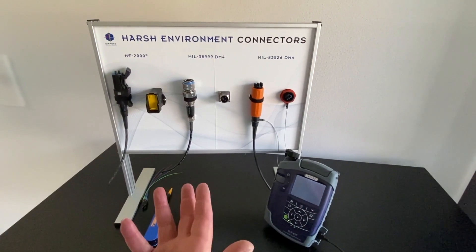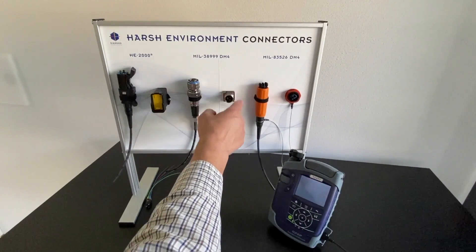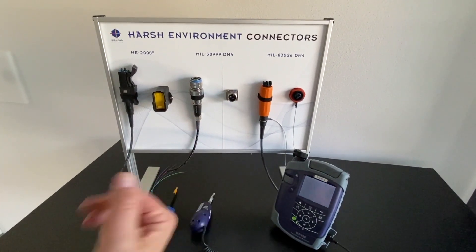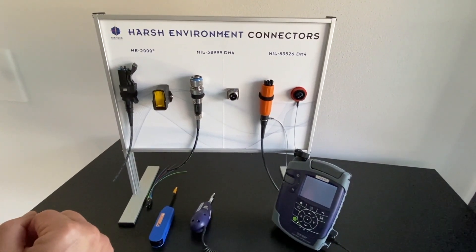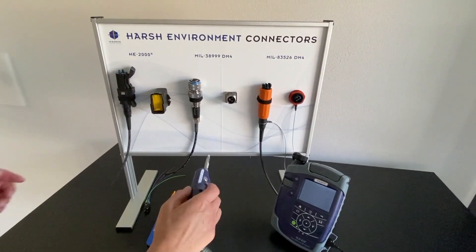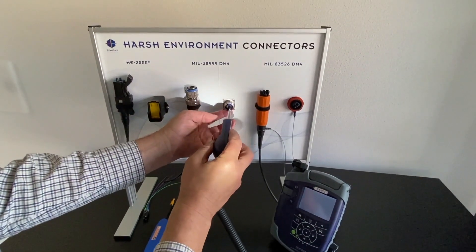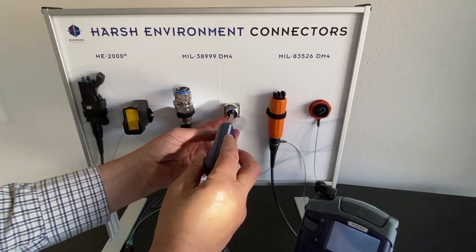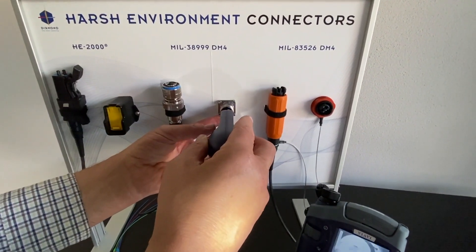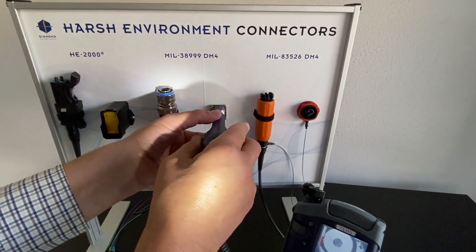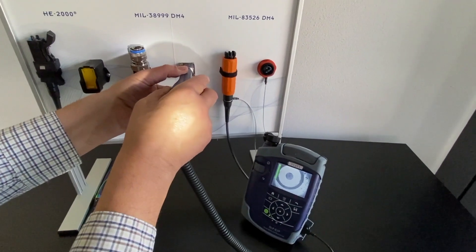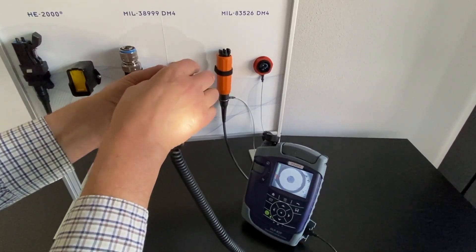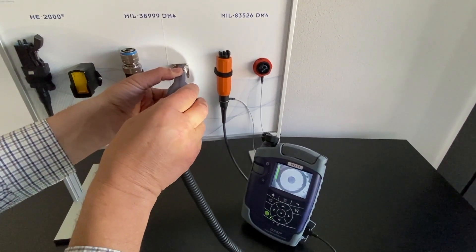We will simulate we are in the field. We have a MIL-38999 bulkhead and we have a problem with two channels. I will now start by inspecting. I will inspect the ferrule without the hollow pin guide and I can see on the microscope already that it's full of dirt.